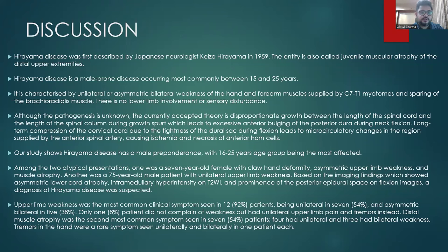Our study shows Hirayama disease has a male preponderance with the 16 to 25 years age group being most affected. Among two atypical presentations, one was a seven-year-old female with claw hand deformity, asymmetric upper limb weakness, and muscle atrophy. Another was a 75-year-old male patient with unilateral upper limb weakness. Based on imaging findings showing asymmetric lower cord atrophy, intramedullary hyperintensity on T2-weighted images, and prominence of the posterior epidural space on flexion images, a diagnosis of Hirayama disease was suspected.